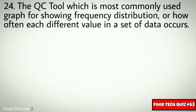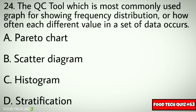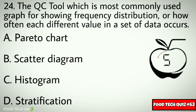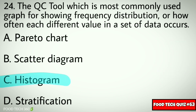Question No. 24. The QC tool most commonly used as a graph for showing frequency distribution — or how often each different value in a set of data occurs: Options: A. Pareto Chart, B. Scatter Diagram, C. Histogram, D. Stratification. Correct answer: C. Histogram.